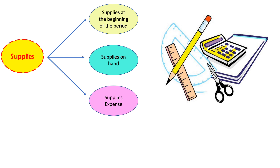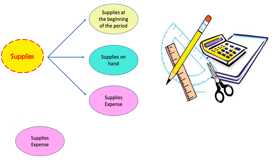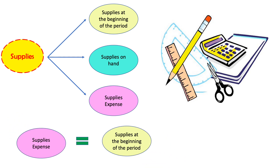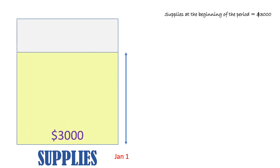To prepare adjusting entries for supplies, we need to determine our supplies expense, which is equal to supplies at the beginning of the period minus supplies on hand. Let's take an example. This is the box of our supplies. Let's say on January 1 we had $3,000.